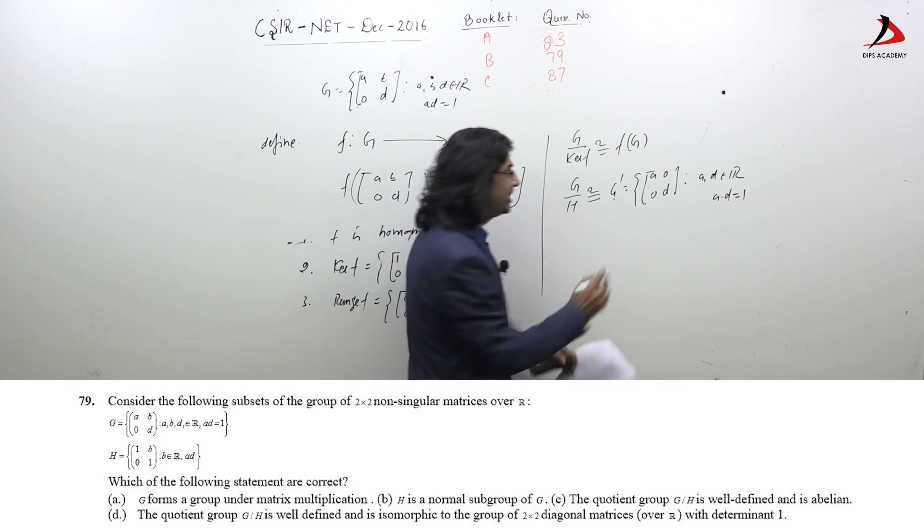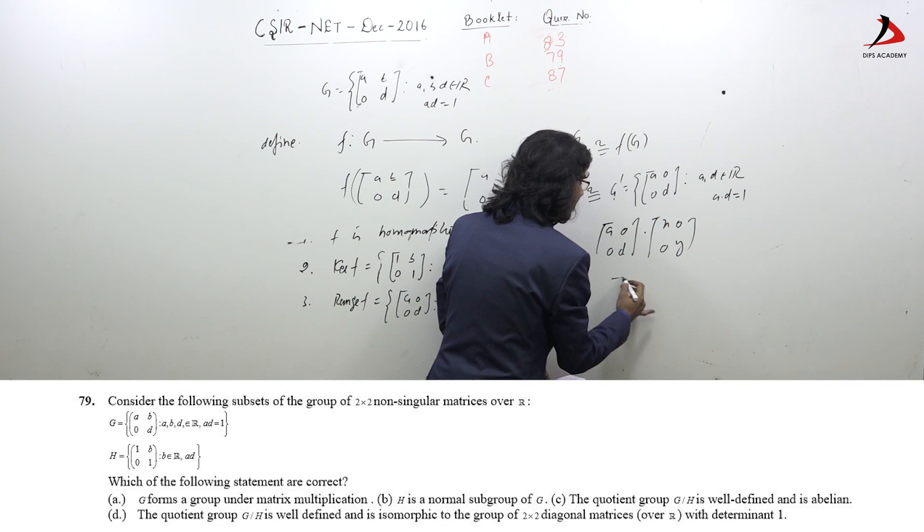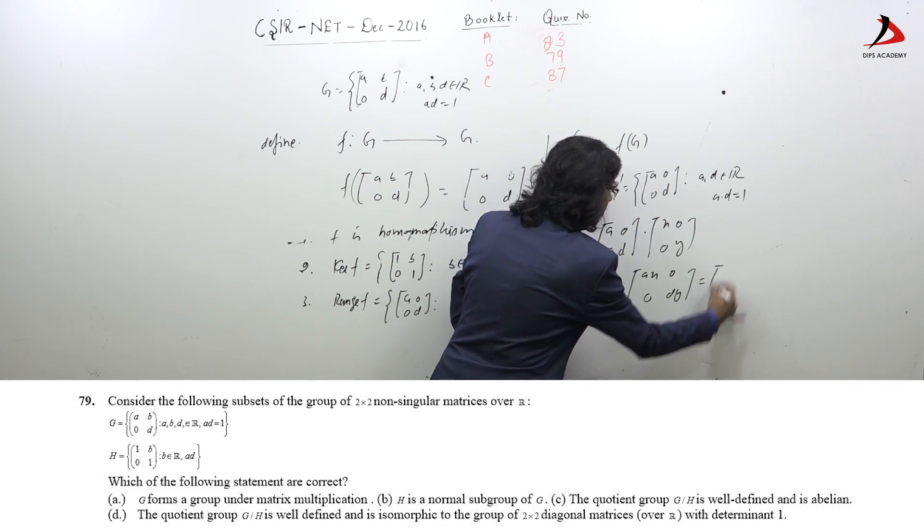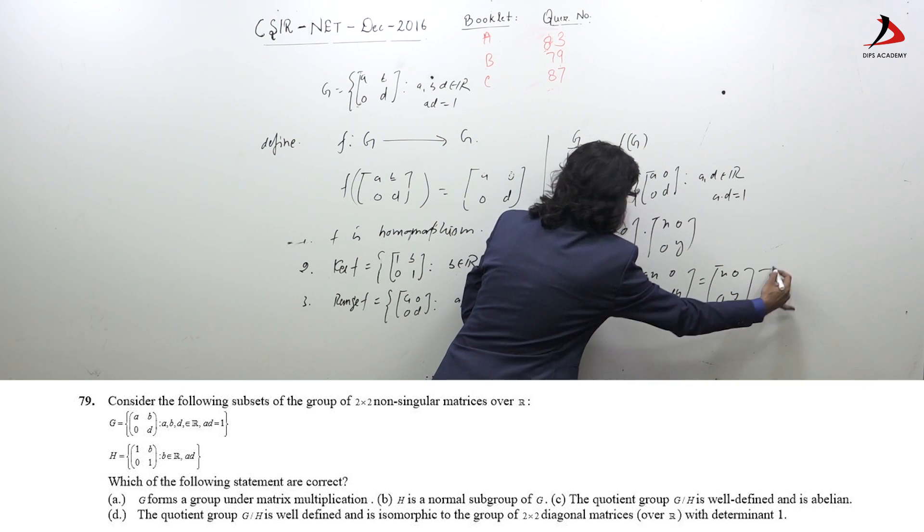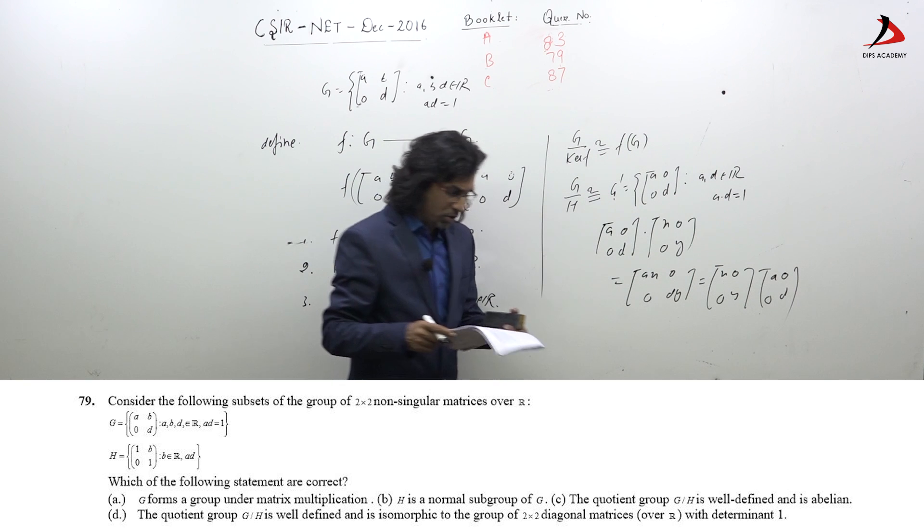You can easily see that [A,0; 0,D] times [X,0; 0,Y] equals [AX,0; 0,DY], which equals [X,0; 0,Y] times [A,0; 0,D]. So this is also correct.